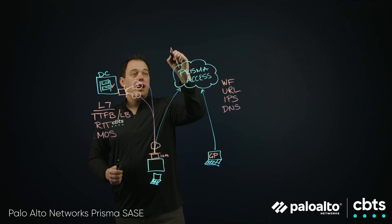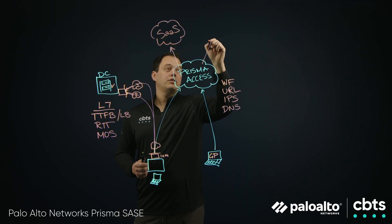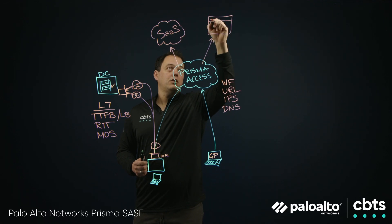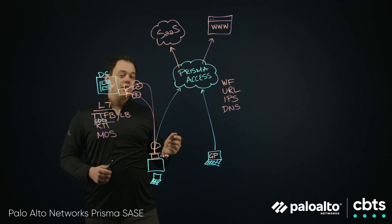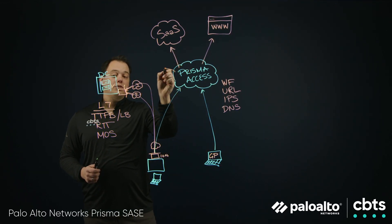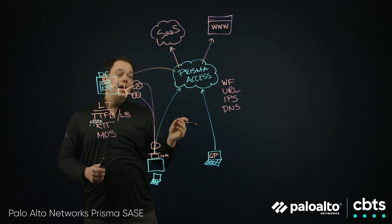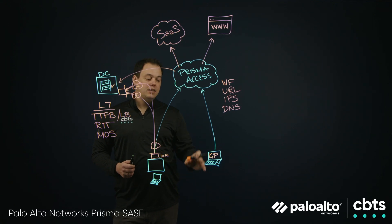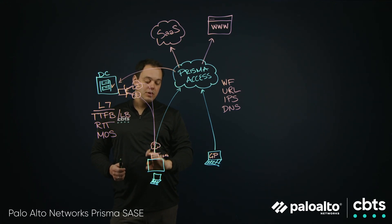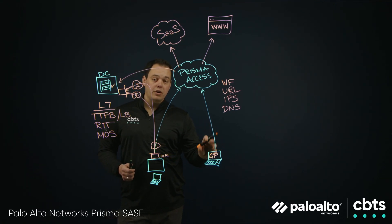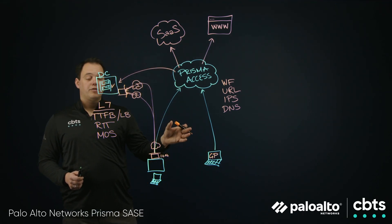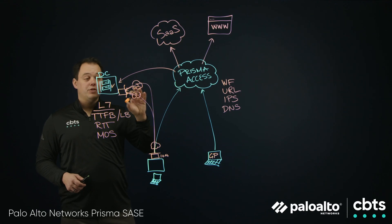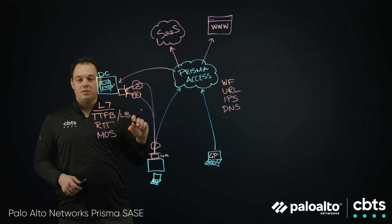From there, I've got connectivity into my SaaS applications and security for general web traffic. For that mobile user, I even build connectivity back into my data center to get access to my private applications through Prisma Access, to give a similar experience whether that user is working remote, working from home, at a customer site, or working in the office. I can provide connectivity and security as a unified SASE strategy with Palo Alto Prisma Access.